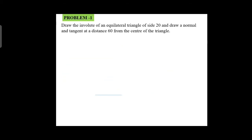The same problem we are going to draw by another method. Draw an equilateral triangle with side 20 mm. Then locate point P on the right corner. From point P, draw a straight line. The straight line length is equal to 60 mm, that means 3 into 20.